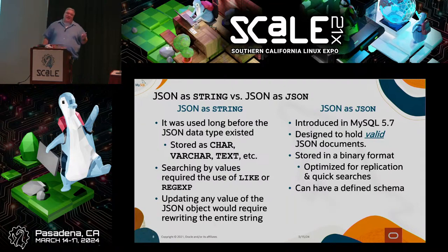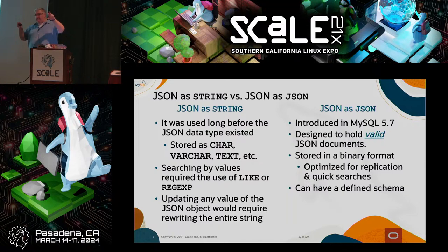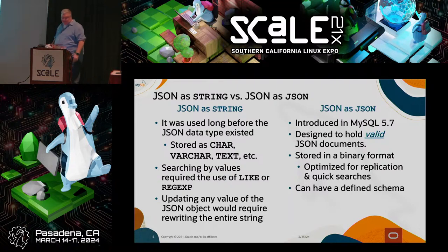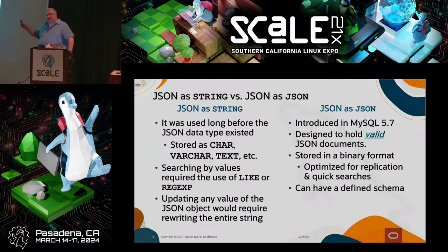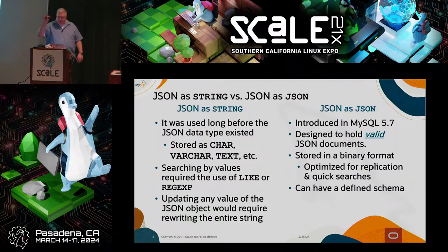The problem is you could get inconsistent results because if you have nested objects where the parent and child share a key — meaning the key is the same name — doing a LIKE search could possibly return results different from what you're looking for. The same thing with regex. And if you updated any value in your JSON document, it updated the entire column — just like doing a regular update.